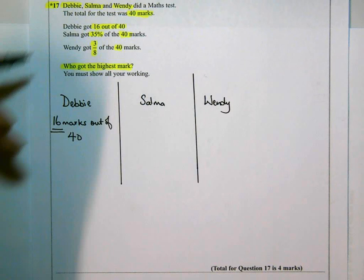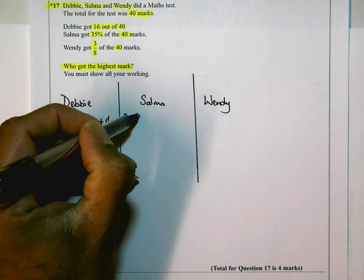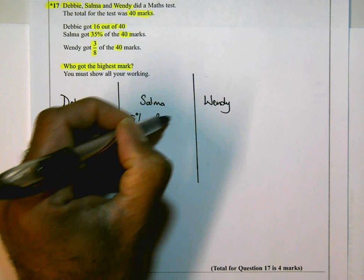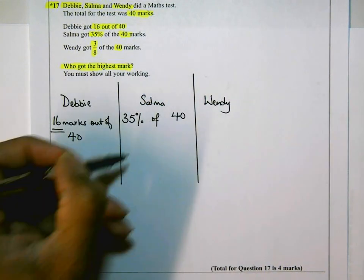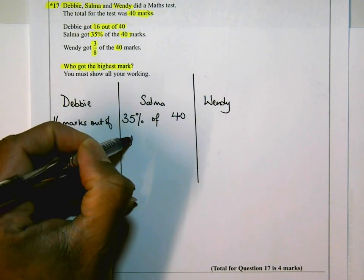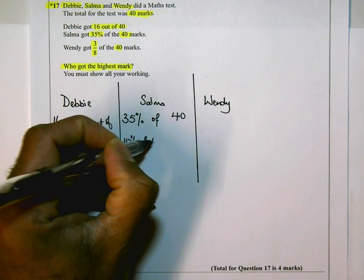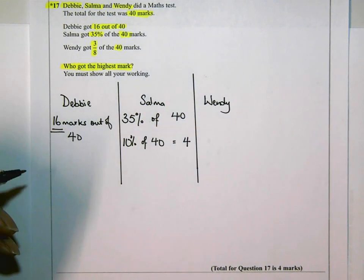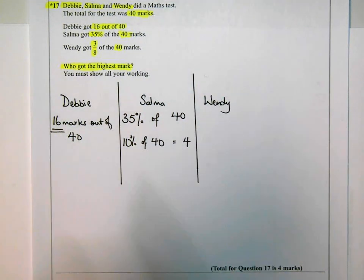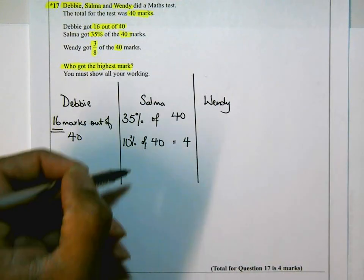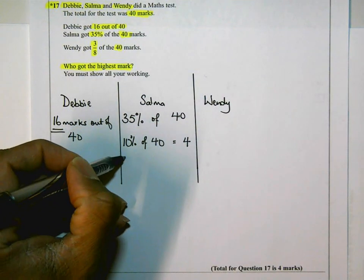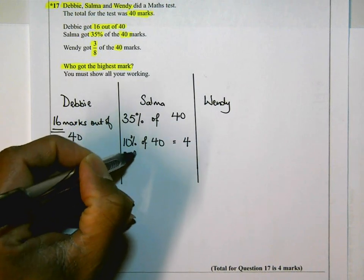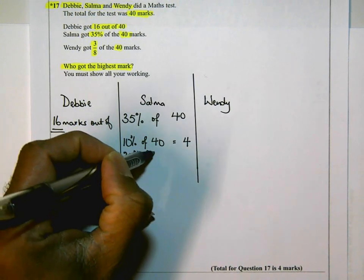Salma got 35% of 40, so I need to work that out. 10% of 40 is 4. To find 10% you divide by 10, so 10% is 4 marks. And if I work my way up, if I double that, 20% of 40 is 8.